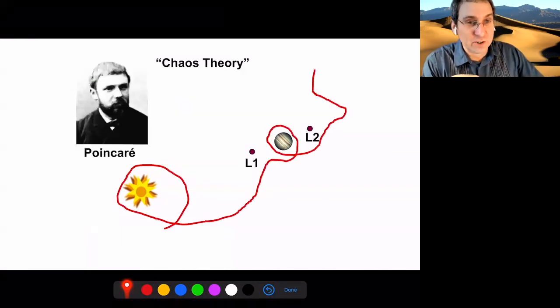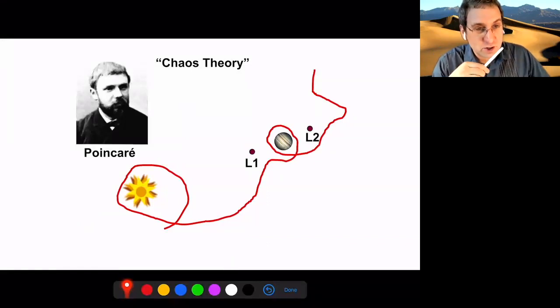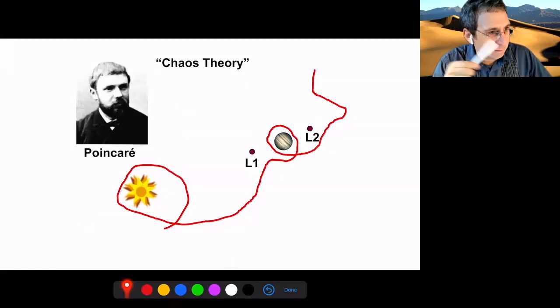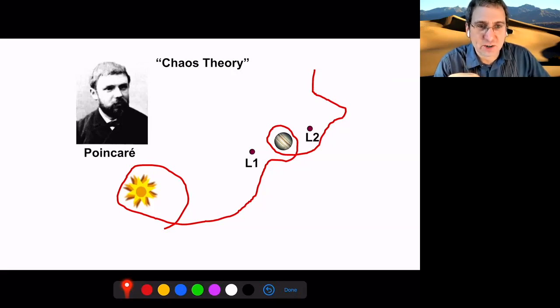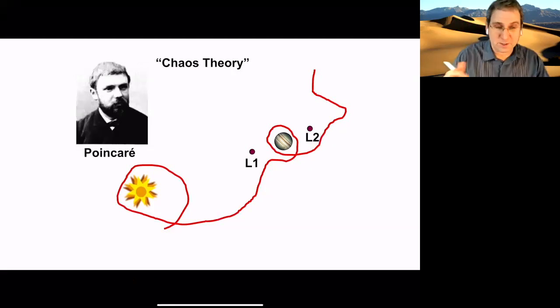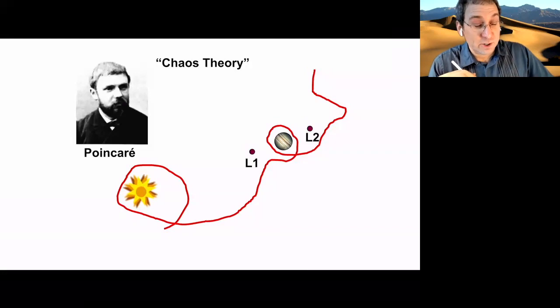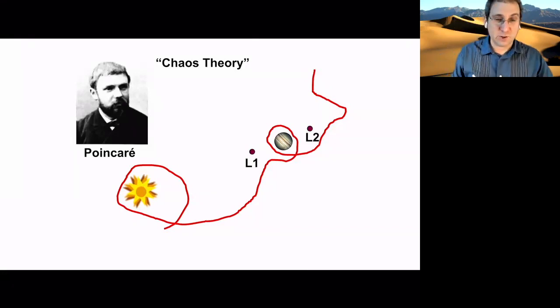Poincaré came along. He's a French, let's call him dynamicist. He lived in a generation where you could kind of be a generalist in terms of science. You didn't have to pick a specialty. And he basically invented chaos theory, and he worked on the three-body problem. Basically, just trying to show, instead of trying to write a closed-form solution, like X as a function of time equals something, just geometrically what would happen using geometric arguments and topological arguments.